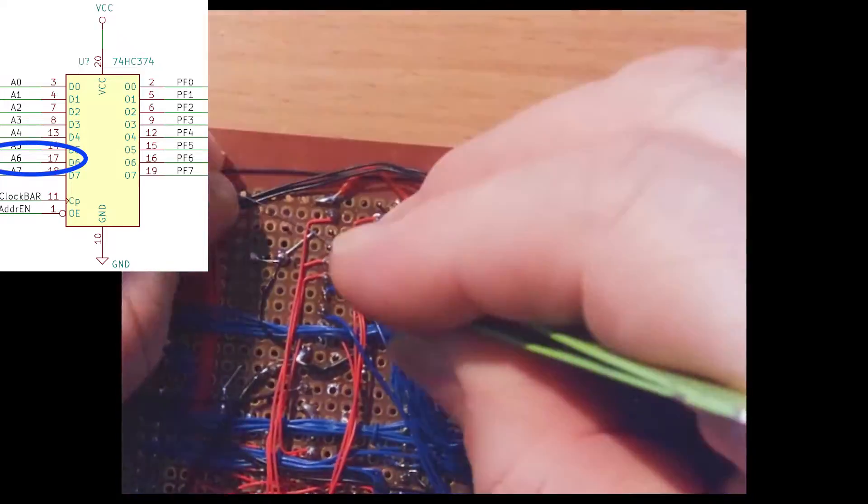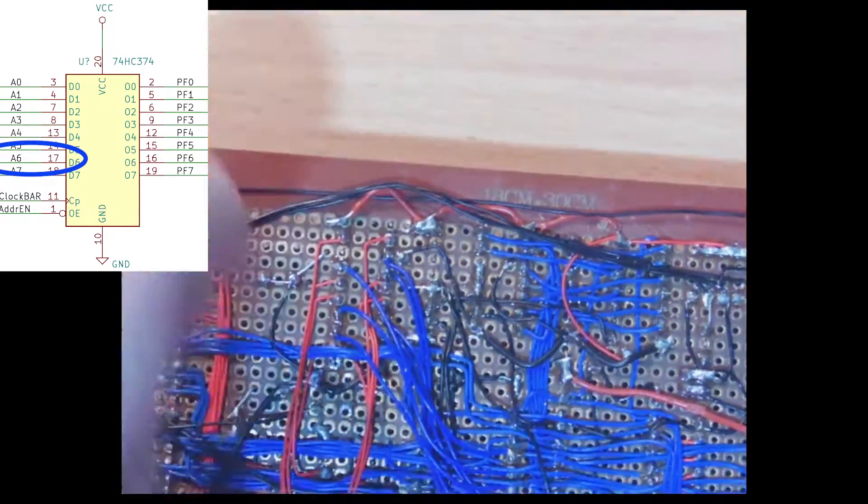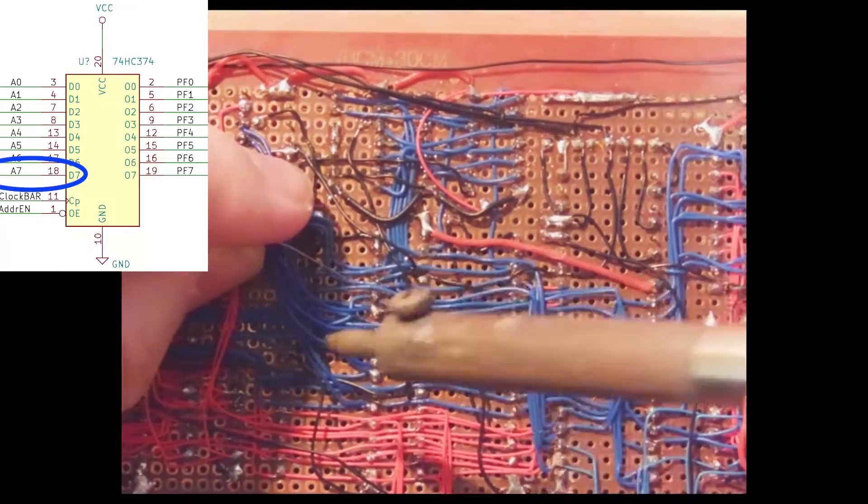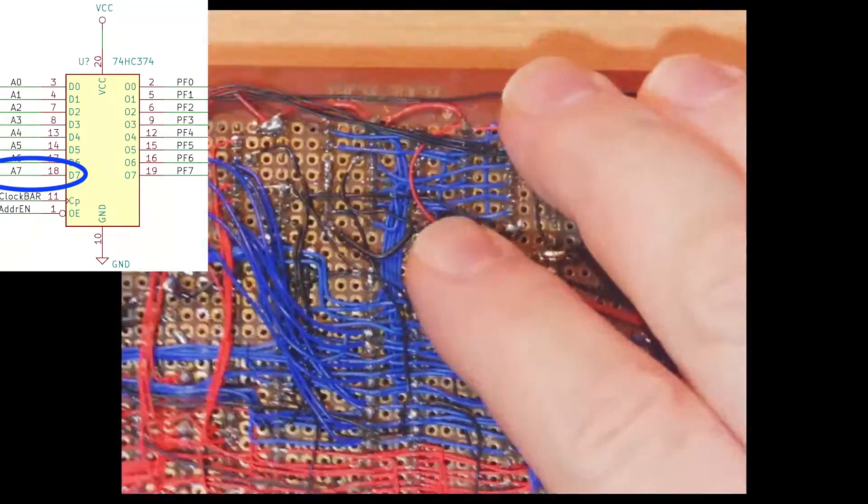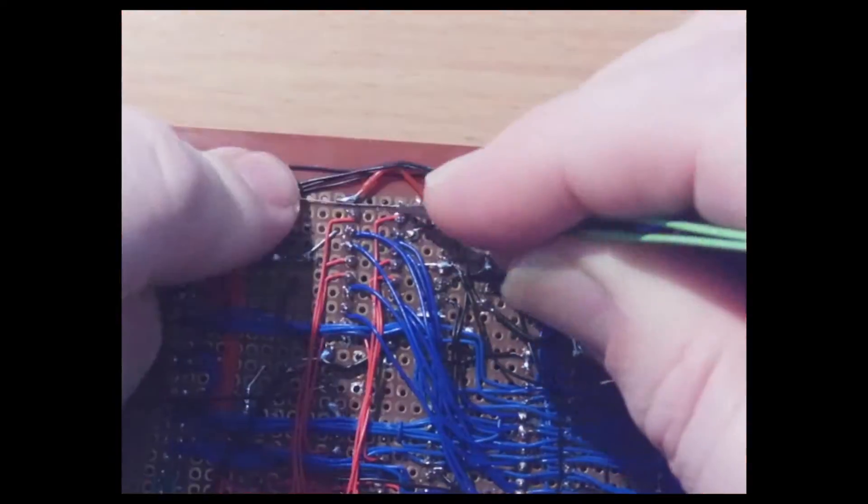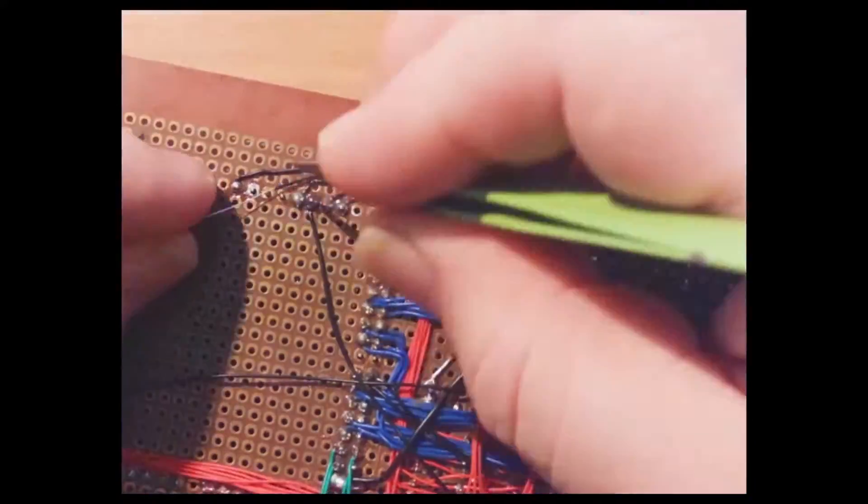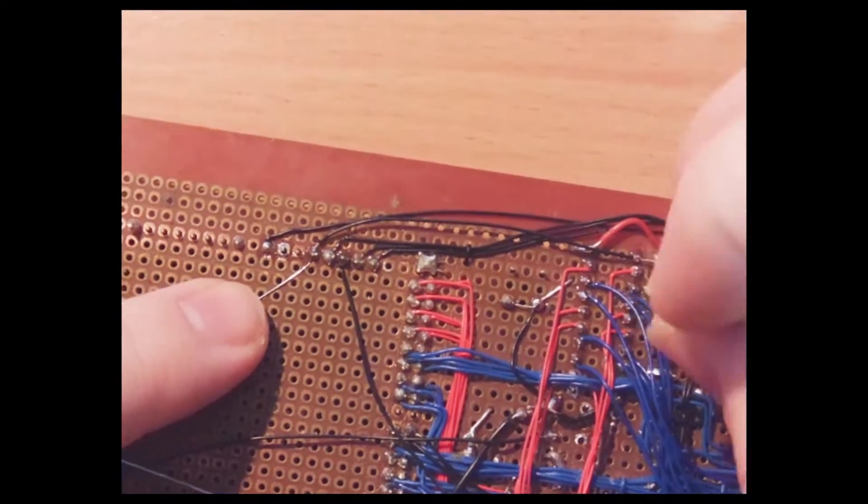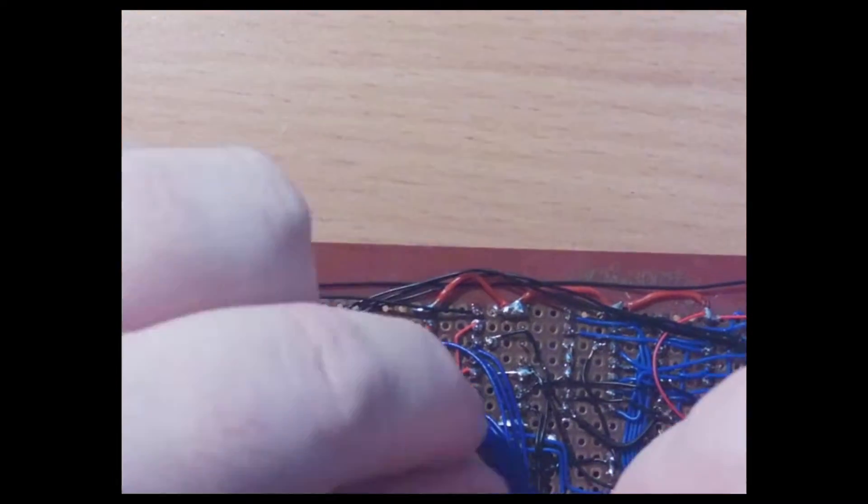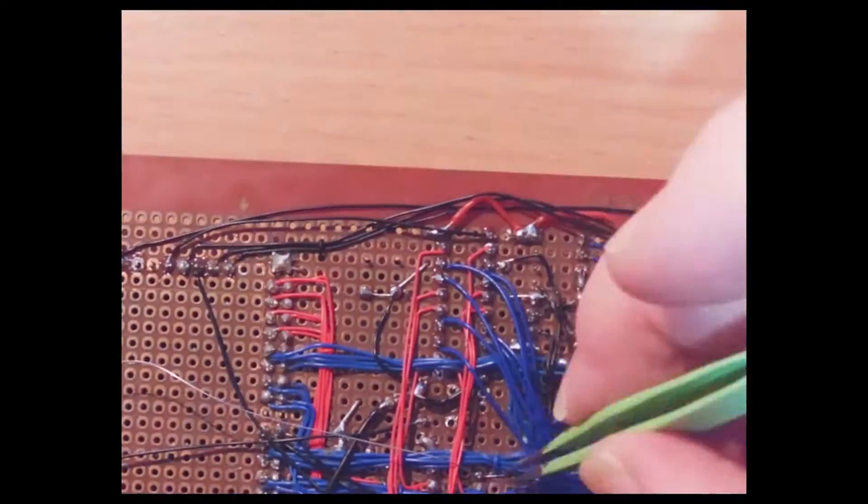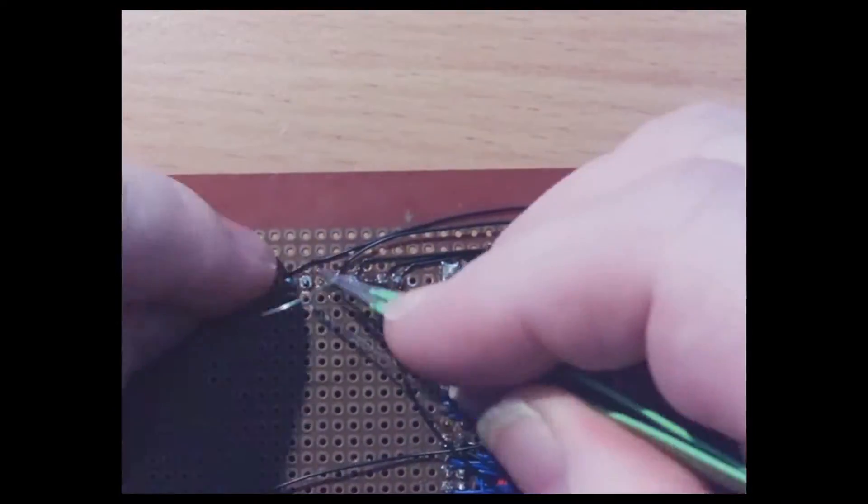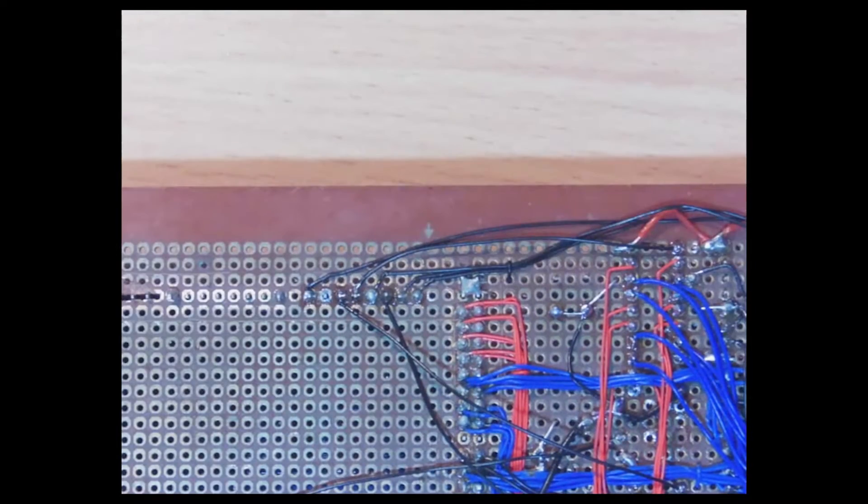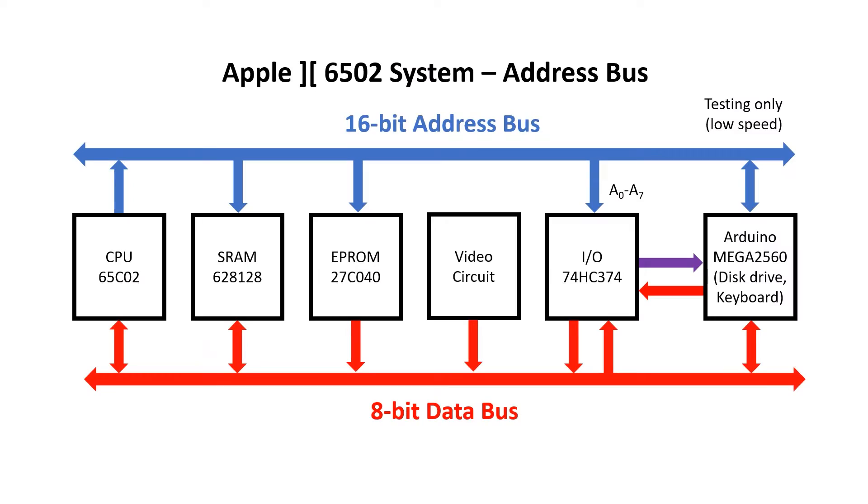Once I've finished wiring up these eight address lines, I'm going to need to work on the output enable for the two 374s that are wired up in parallel. Now it's up to me to make sure that they're never turned on at the same time. Otherwise we'll get output contention, and we've seen before how much of a problem that can be. But I think the easiest way is just to wire the output enable directly up to some spare pins on the Arduino. But it means it's going to be up to the software not to make the error of turning them both on at the same time.